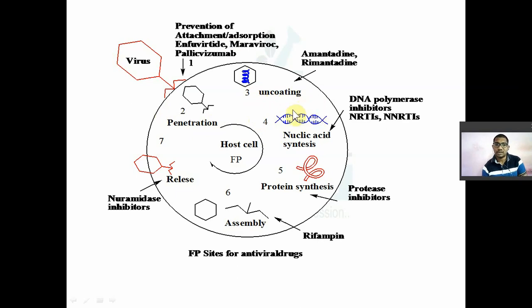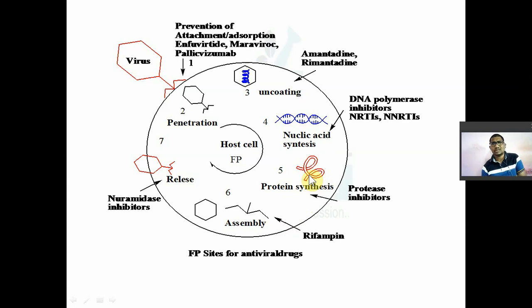After uncoating, the released genetic material of the virus starts replicating. This DNA or RNA will start replication. After replication there will be transcription, and after transcription there will be protein synthesis — step number five. The proteins synthesized are known as primary transcripts; some are structural proteins and some are functional proteins.